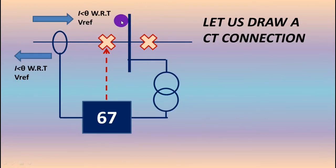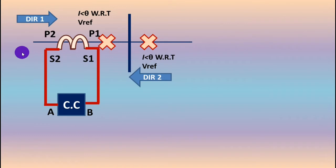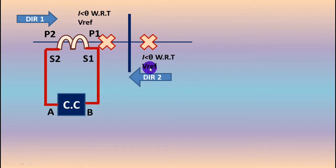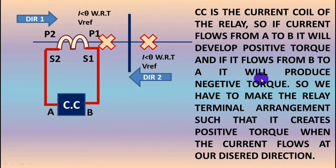The CT sees the same fault current having the same phase relationship with the reference voltage — once for current travelling from left to right and once for current travelling from right to left. So these are the two conditions: I at angle theta, I leading theta with respect to V reference — once flowing from left to right (direction 1) and once from right to left (direction 2). Both have the same I with respect to V reference; the phase angle relationship with reference voltage is the same for both cases.